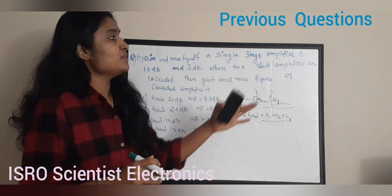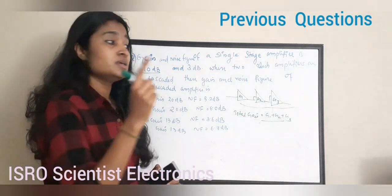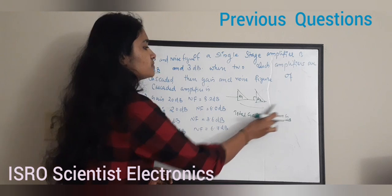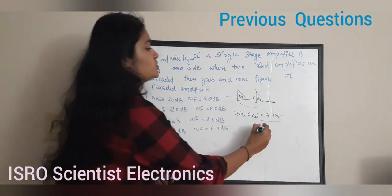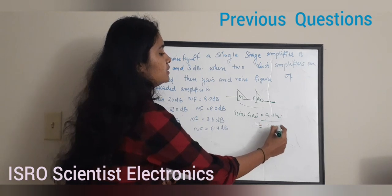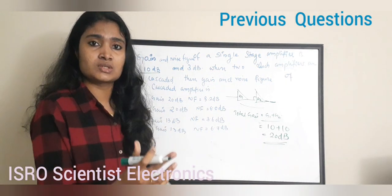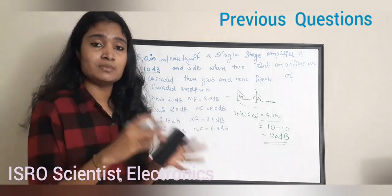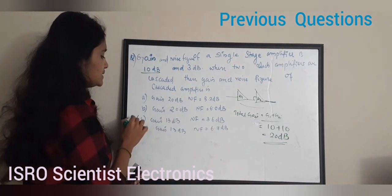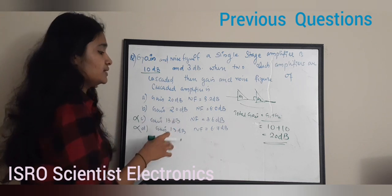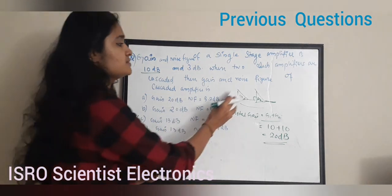Here we have two single-stage amplifiers each with a gain of 10 dB, so total gain = G1 + G2 = 10 dB + 10 dB = 20 dB. From this we can eliminate options C and D, which both list a gain of 13 dB. Now let's see how the noise figure changes when amplifiers are cascaded.